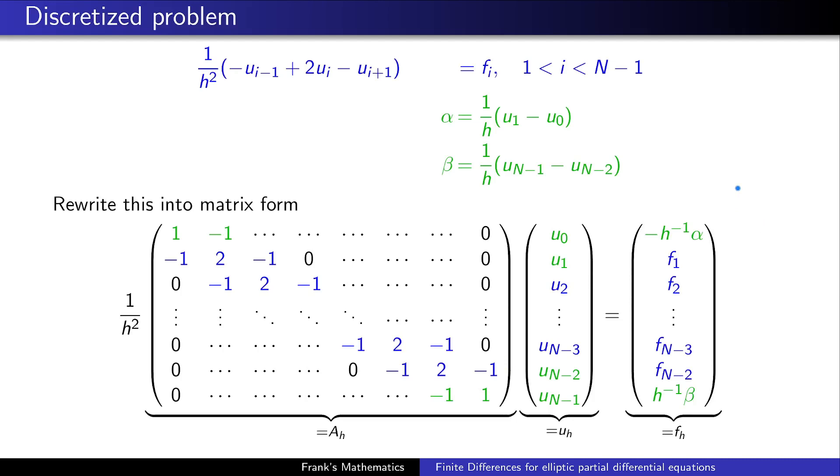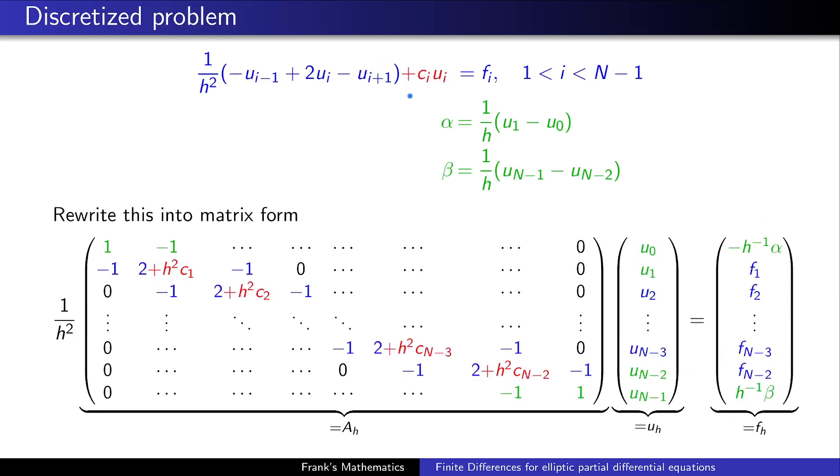Okay, so all we are left now is with the additional red part. So this is the c(x) times u(x) part in the partial differential equation. But well, this is just an artificial coefficient for the uᵢ. So we just add them here on the diagonal. The h² cancel out with this h². And that's basically all we have to do now to get our discretized problem into a very big matrix.